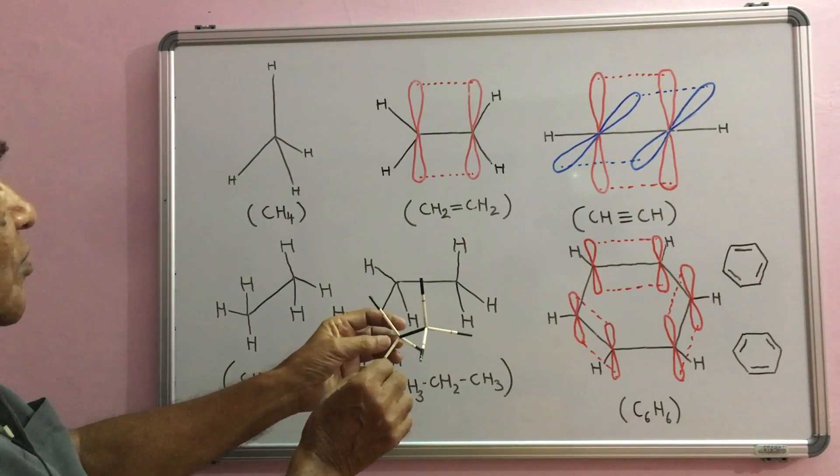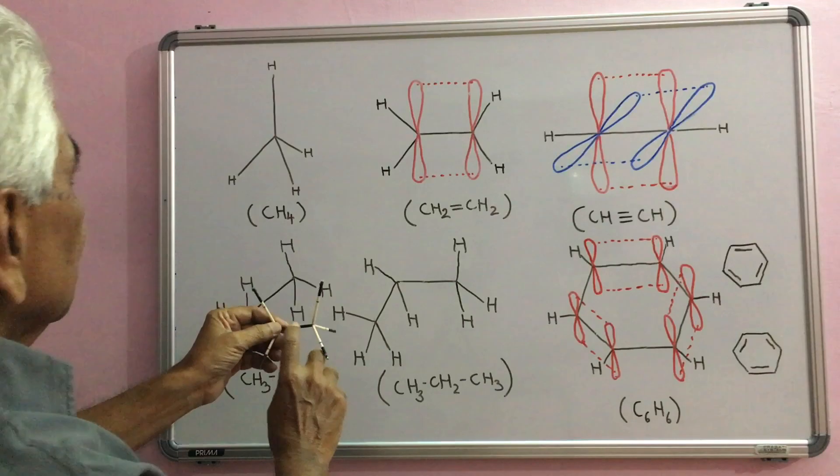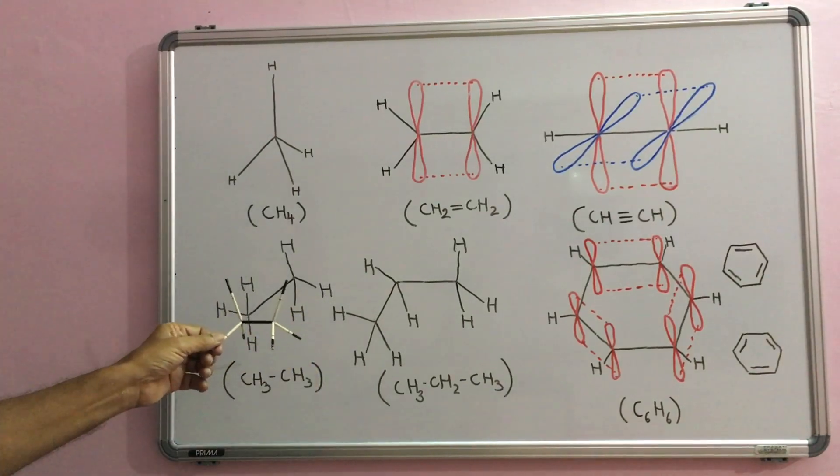Three CH bonds over here, three CH bonds, this is a CC bond. Ethane molecule.